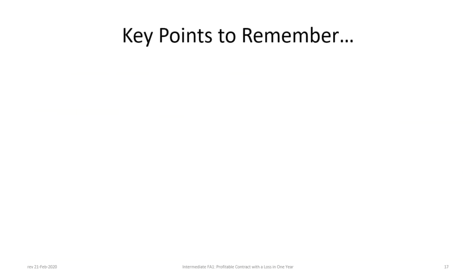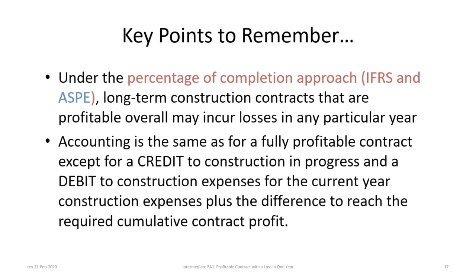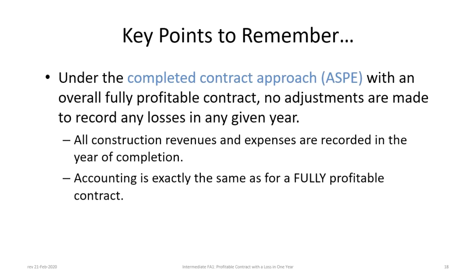Now for some key points to remember. First, under the percentage of completion approach — which is applicable to both IFRS and ASPE — long-term construction contracts that are profitable overall may incur losses in any particular year. Just like in this case, we had a profit in 2020, a loss in 2021, and then finally a profit in 2022. The accounting is the same as for a fully profitable contract, except for a credit to construction in progress and a debit to construction expenses for the current year construction expenses, plus the difference to reach any required cumulative contract profit. Finally, under the completed contract approach with an overall fully profitable contract, no adjustments are made, and in the years leading up to the final year of construction the gross profit is zero. All construction revenues and expenses are recorded in the year of completion, and the accounting is exactly the same as for a fully profitable contract.